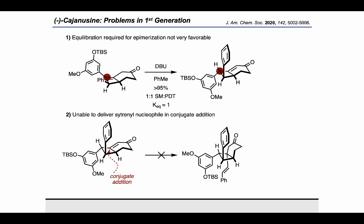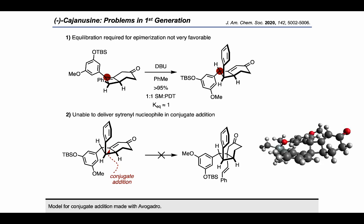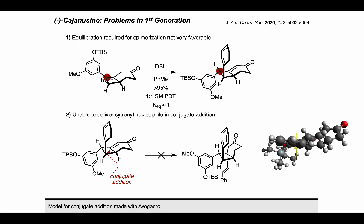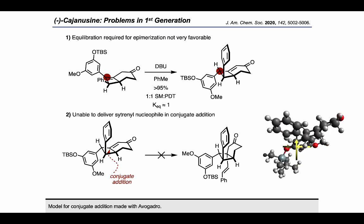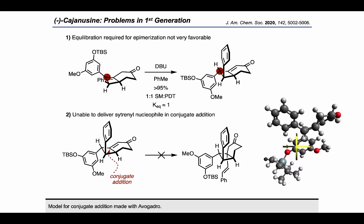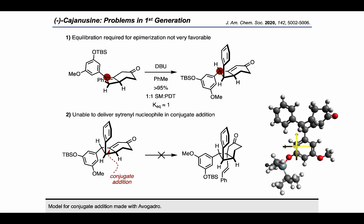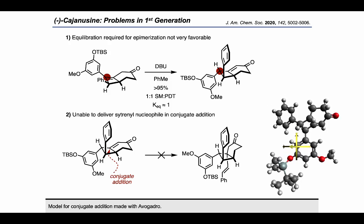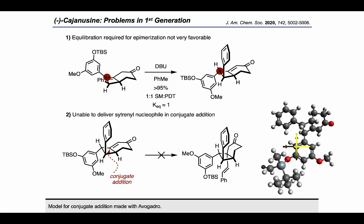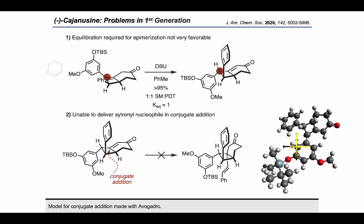For example, if we look at a model of the substrate starting from a top view and reorienting it to see the steric effect of the aromatic ring on the bottom face of the cyclobutane, it's clear that it could be very difficult to do the conjugate addition with that aromatic ring present.